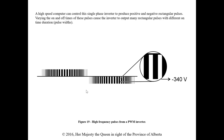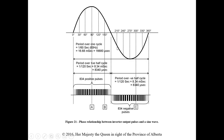By controlling how long those pulses are on, we control the average output voltage. If the pulse is on longer, we see that 340 V for longer, giving a higher average; shorter on-time gives less average voltage. A high-speed computer controls this single-phase inverter to produce positive and negative rectangular pulses with varying on and off times, causing the inverter to output many pulses with different average voltages — effectively mimicking the instantaneous values of a sine wave.